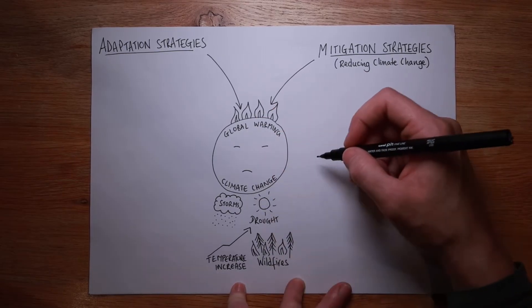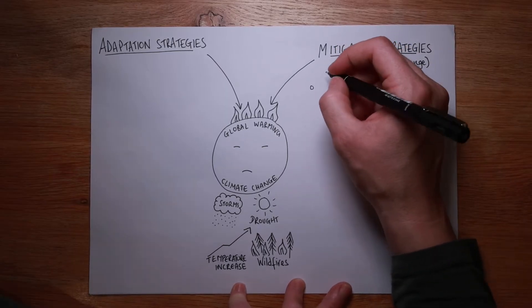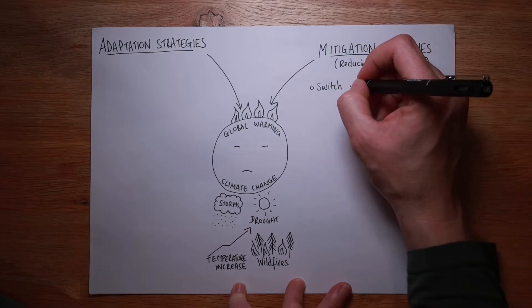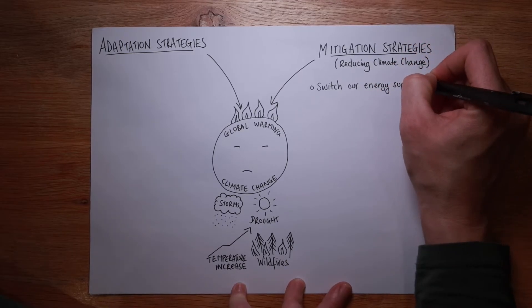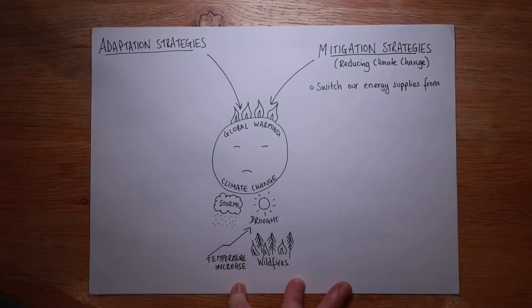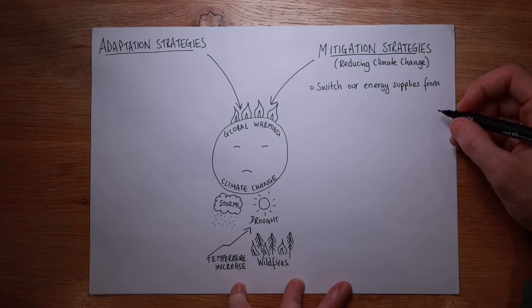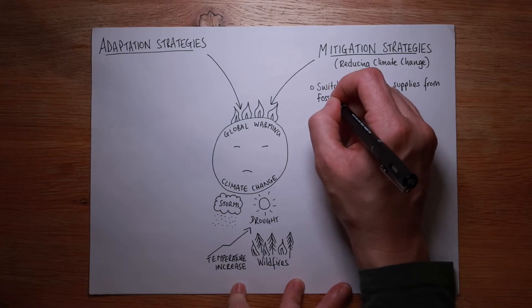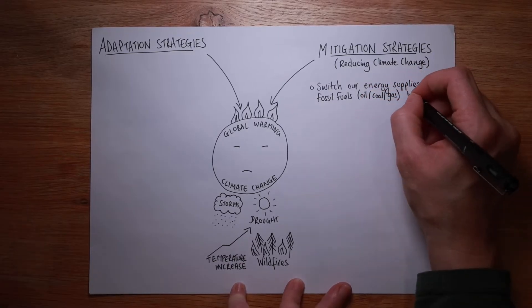We know that global warming is caused by burning fossil fuels — that's one of the biggest problems. So the first mitigation strategy is to actually switch our energy supply from fossil fuels to renewables. I've seen this happen. I've been teaching about 14 years, and when I started out back in 2009, renewables were about 5% of our electricity. Now they are often about 40–45%, so it's gone up hugely. We need to switch our energy supplies from fossil fuels — oil, coal, and gas — to renewables.